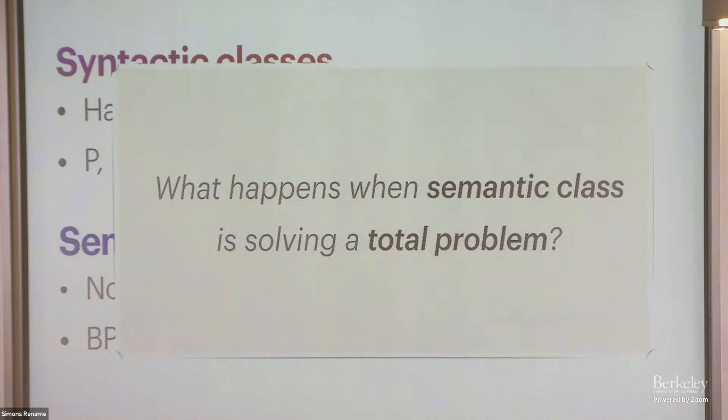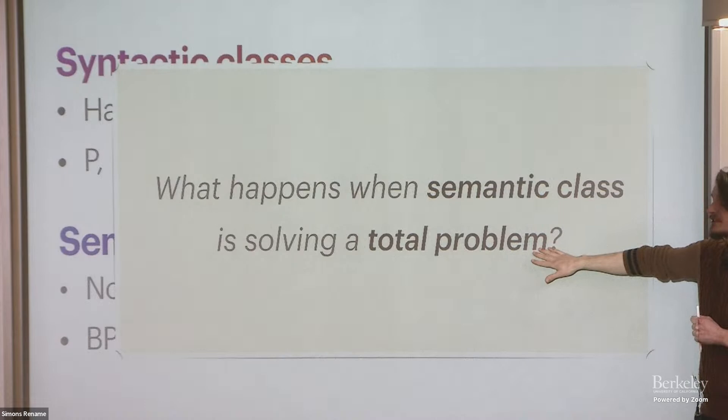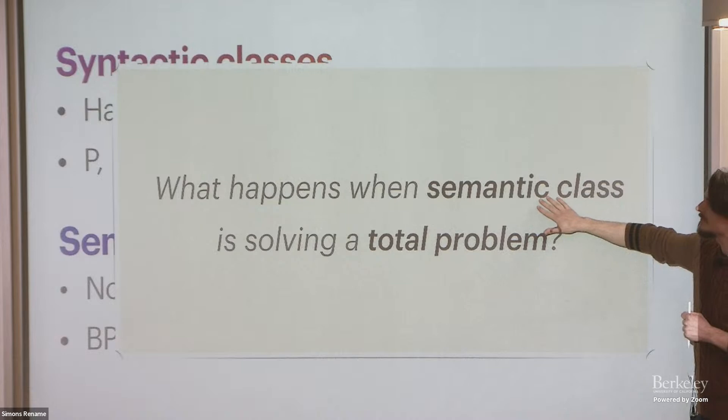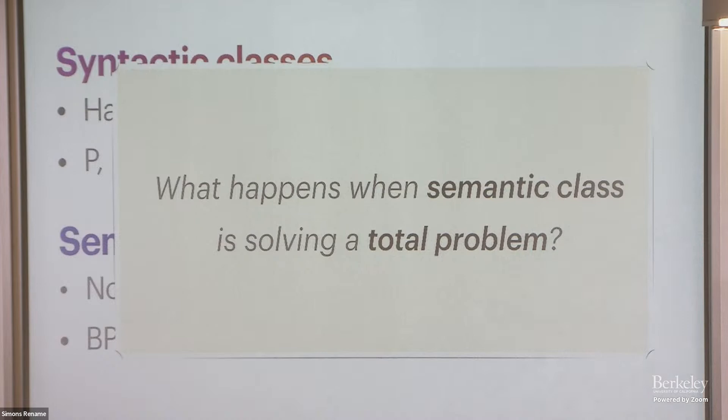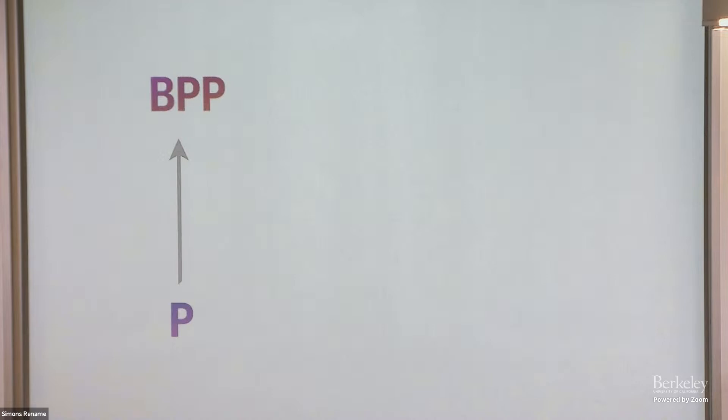Okay, so this is a big divide amongst the classes we study. And here's a kind of a machine for producing conjectures in concrete complexity. Suppose I look at a semantic model, one of these promise models, but I ask it to solve a total problem. Somehow, you could—it seems like you can't really use the power of this semantic promise if the problem I'm asking you to solve is total, but that's sort of the intuition.